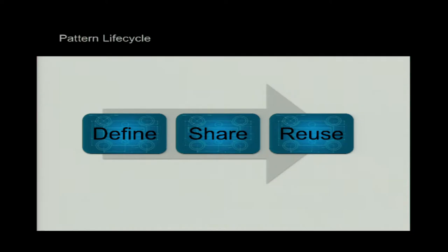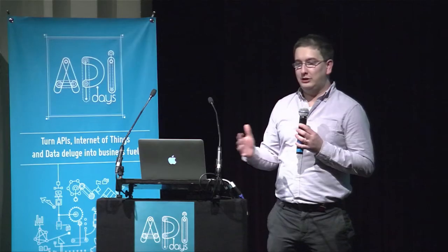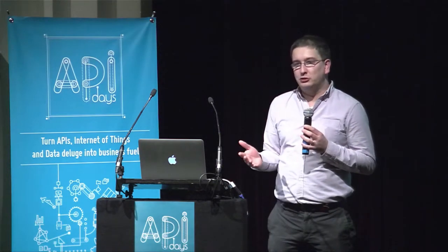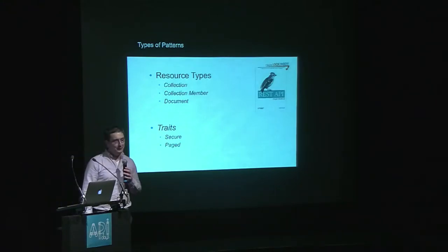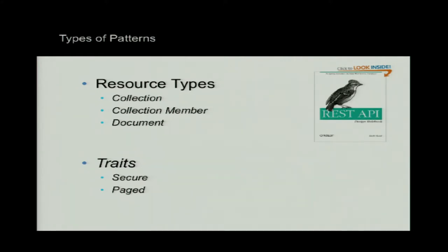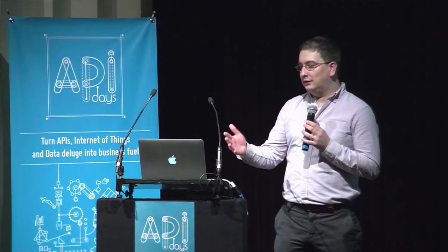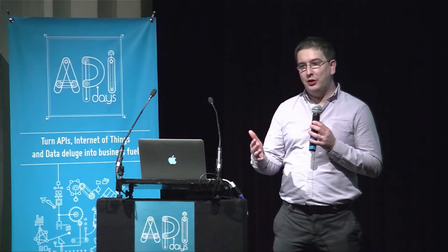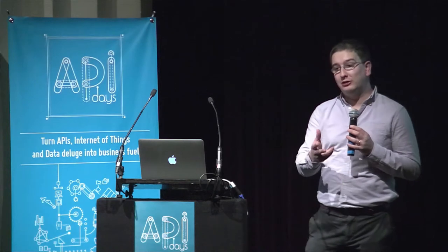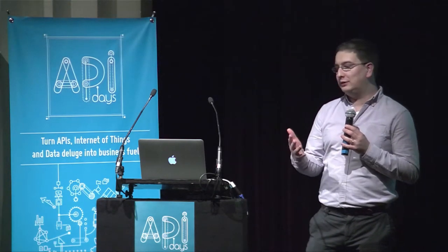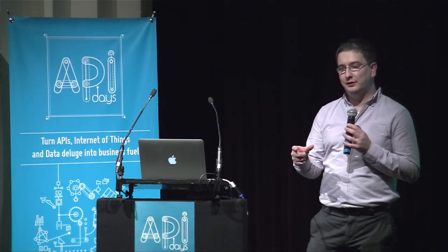Patterns need to be defined, shared, discoverable, and then people can reuse them. By doing that, you can share knowledge and create more consistent APIs. In terms of what types of patterns we're talking about: resources — there are different types: collections, members of collections, documents. There's a good book by Mark Massey, REST API Design Cookbook, which covers a number of patterns. Beyond resource types, there are also traits — behaviors that apply to an API method, such as a GET on a collection that needs to be paged, or a method that needs to be secured.